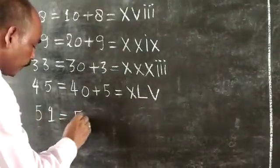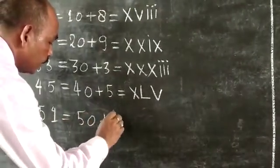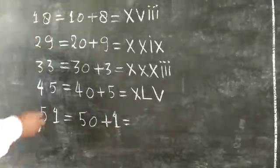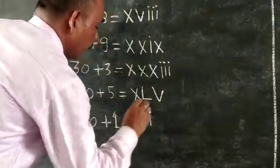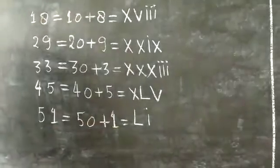Next, 51: 50 plus 1. Roman numeral of 50 is L, add 1 which is I. 51 equals LI.